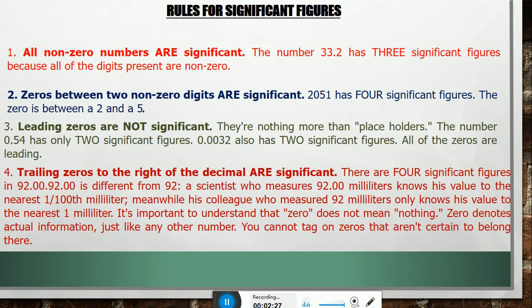It's important to understand that zero does not mean nothing. Zero denotes actual information, just like any other number. You cannot tag on zeros that are not certain to belong there.